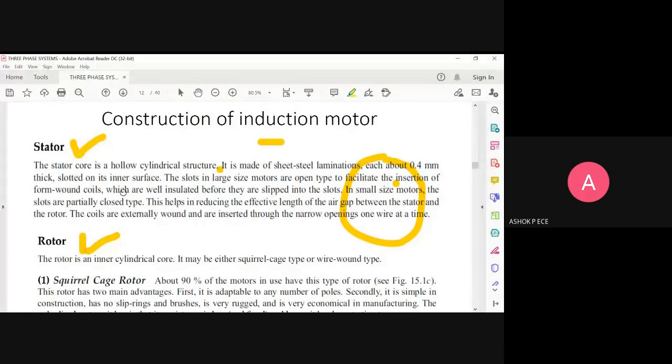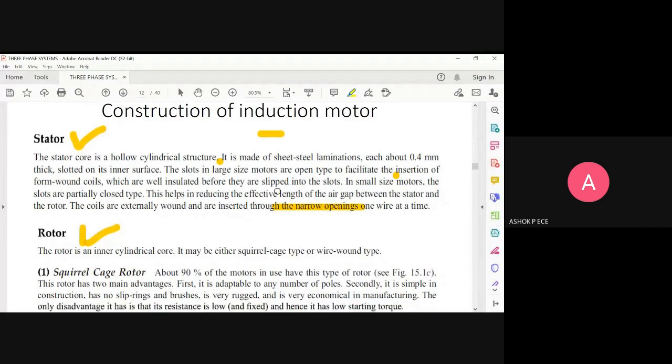In small size motors, the slots are partially closed type. Our aim is to effectively reduce the gap between the stator and rotor, because when the gap is more, you will have leakage flux. When there is very little gap between stator and rotor, you have maximum coupling between the fields. The coils are wound through narrow openings inside the stator. The stator houses three phase windings which carry voltages that are 120 degrees apart from each other.